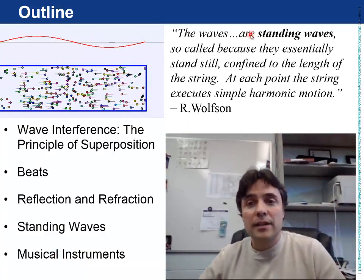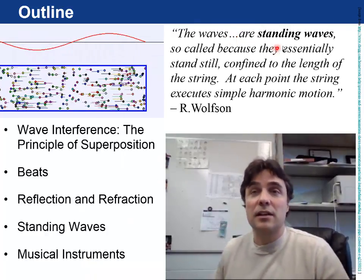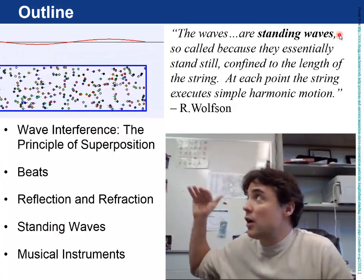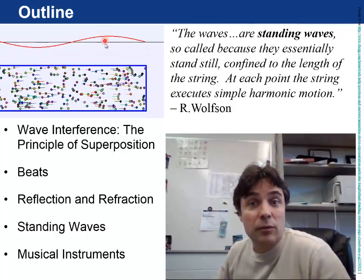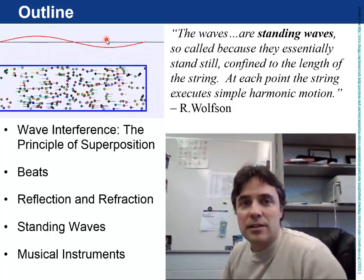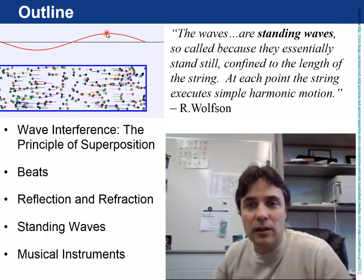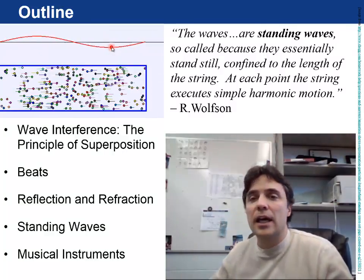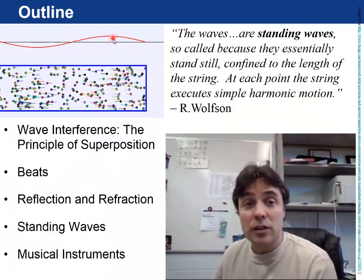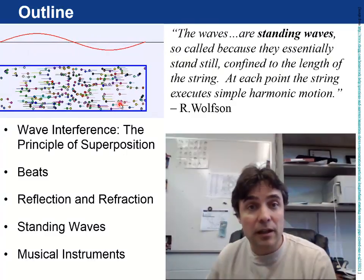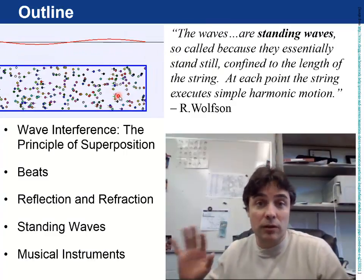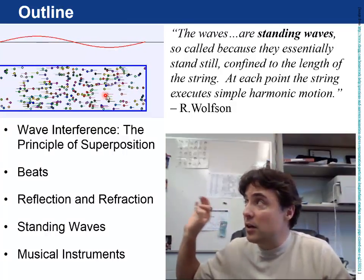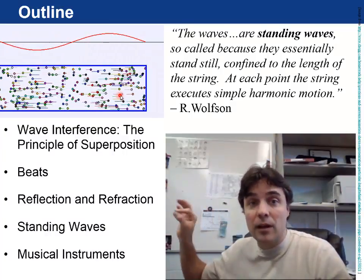If you look at the quote above, it says that the waves that you can actually see up there in the animation are standing waves. So that top red line is like a wave on a string. It's called that because they essentially stand still, confined to the length of the string. And each point on that string is oscillating with simple harmonic motion up and down. There's also something called standing sound waves, in which you have a longitudinal wave, so each point in the medium there is oscillating with simple harmonic motion left to right.